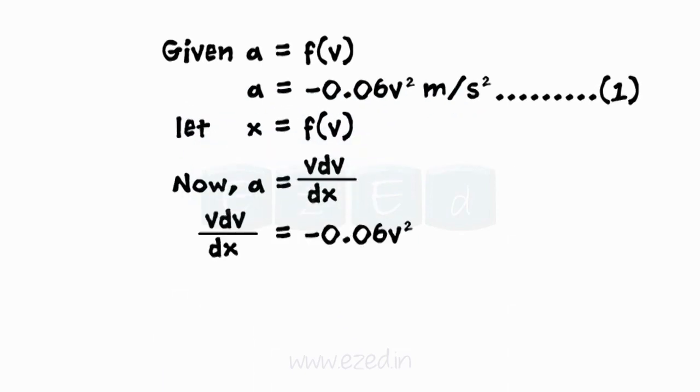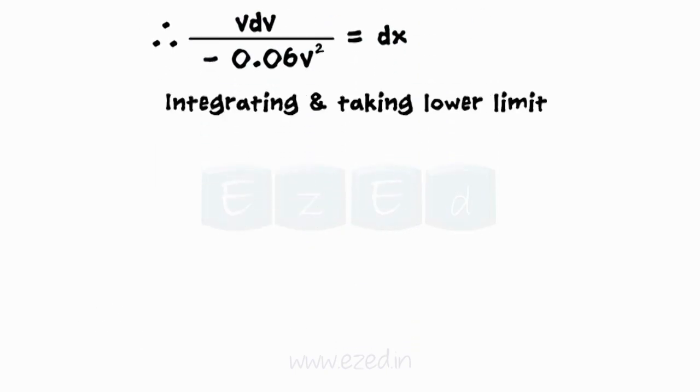On substituting the values, we get the following equation. We have been given that at x = 0, v = 25 m/s. Now integrating and taking the lower limits.